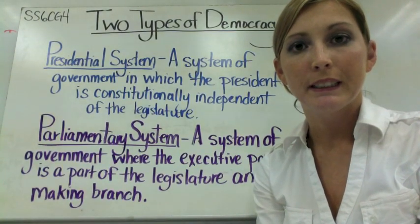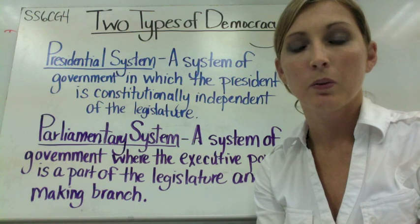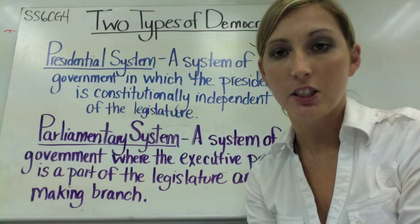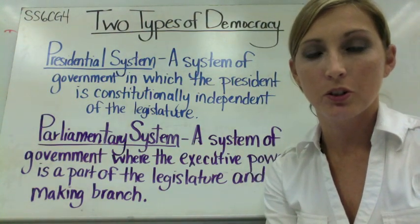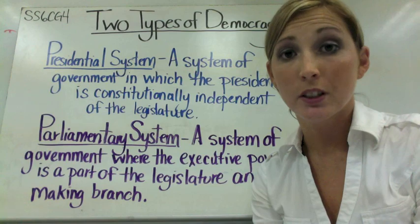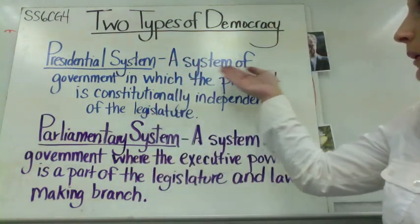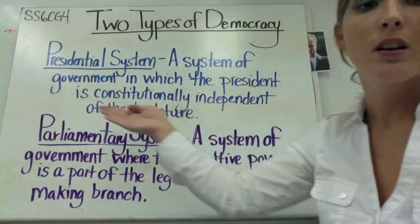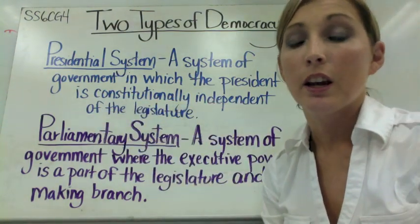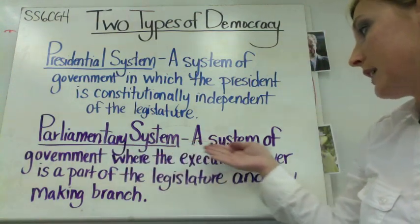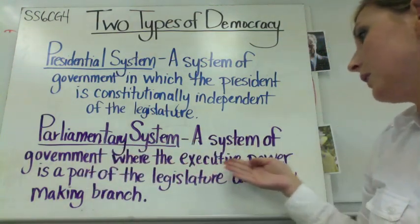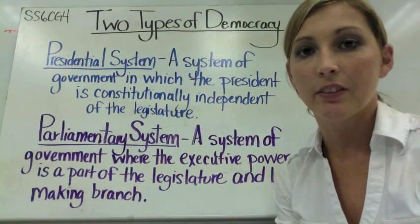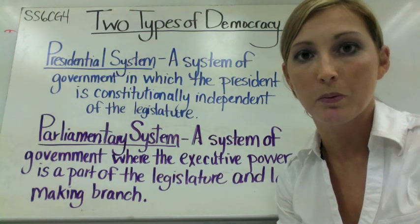Now that we've talked about the basic definition of a democracy, we're going to talk about two types of democracy. This is all covered under standard SS6CG4, comparing and contrasting presidential and parliamentary democracies. A presidential democracy is a system of government in which the president is constitutionally independent of the legislature. In contrast, a parliamentary system is one where the executive power is part of the legislative and lawmaking branch. Now we're going to dive into specific examples of each.